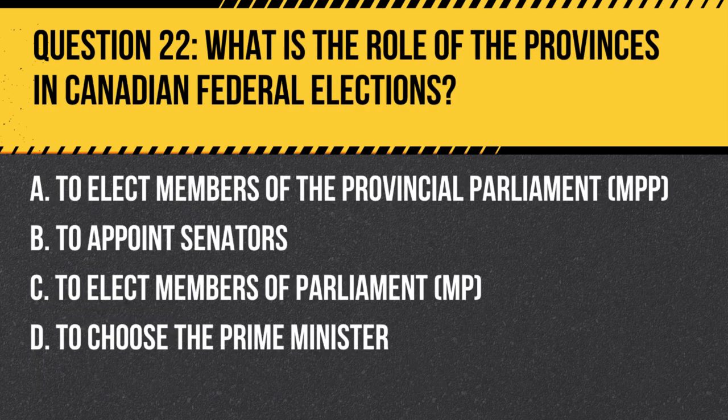Question 22. What is the role of the provinces in Canadian federal elections? A. To elect members of the provincial parliament (MPP). B. To appoint senators. C. To elect members of parliament (MP). D. To choose the Prime Minister.